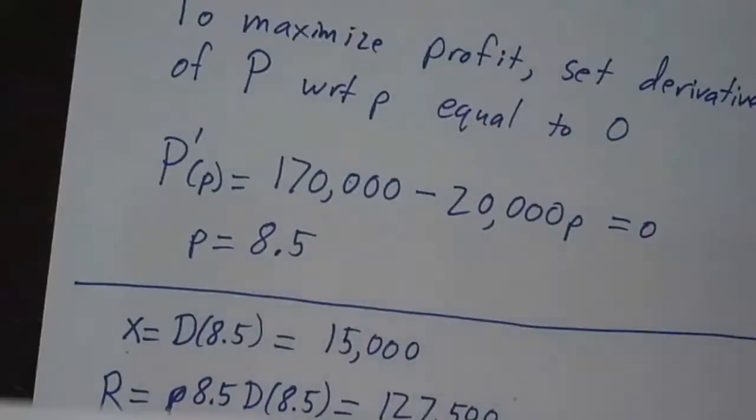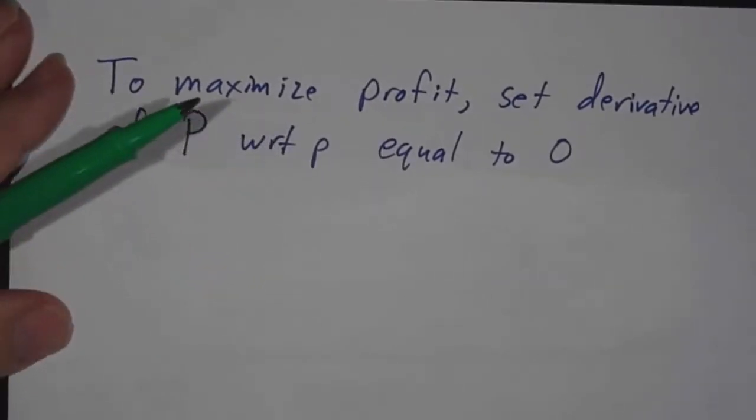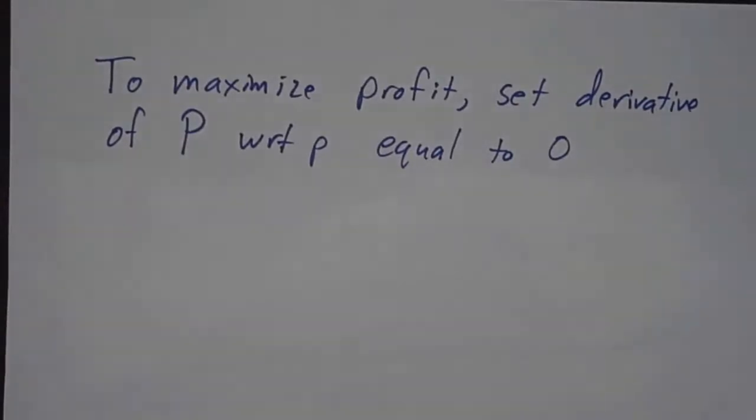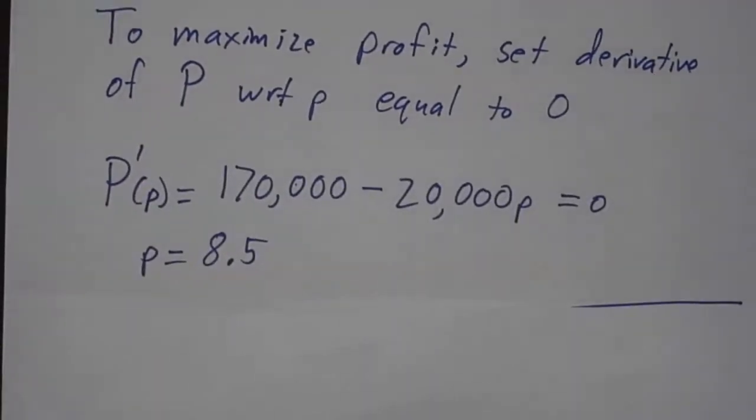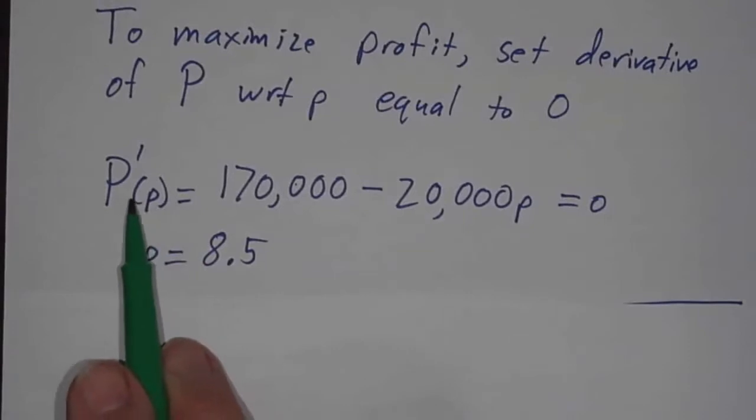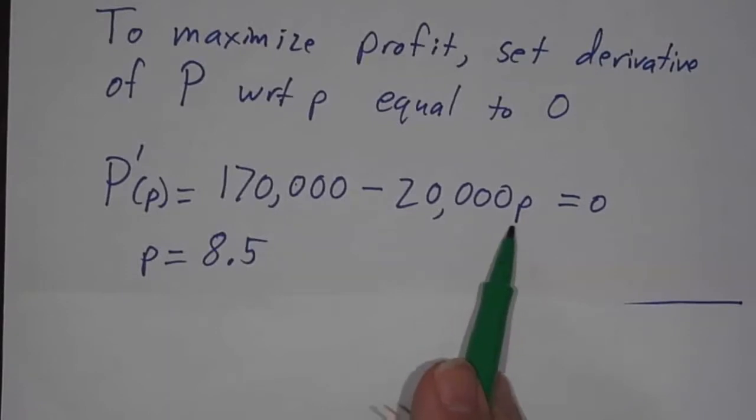So to maximize profit, instead of taking the derivative of P with respect to x and setting it equal to 0, you take the derivative of the profit with respect to the price and set it equal to 0. The derivative of the profit with respect to price, which is not called the marginal profit—marginal things are derivatives with respect to number—this is a derivative with respect to price. The derivative with respect to price is 170,000 minus 20,000p. And that is 0 when p is $8.50.